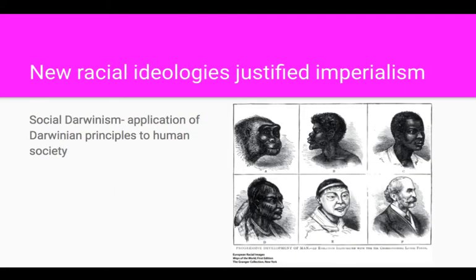There is also a racial component to imperialism. Social Darwinism takes the natural selection scientific theory of Charles Darwin and applies it to human society. This diagram — completely inaccurate scientifically and morally — was used to justify imperialism. It's an important thing to recognize in terms of how European societies based on Enlightenment democratic principles could subject colonial peoples to such horrible treatment.